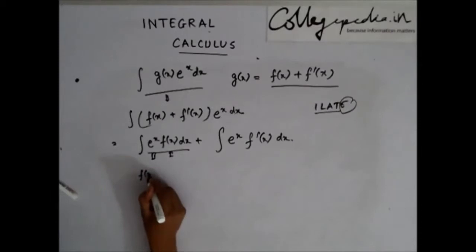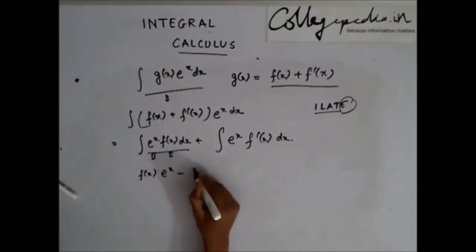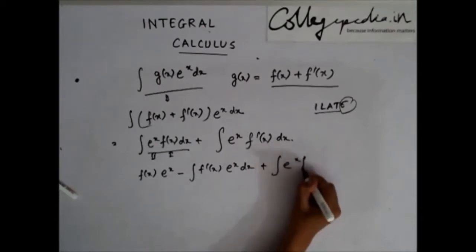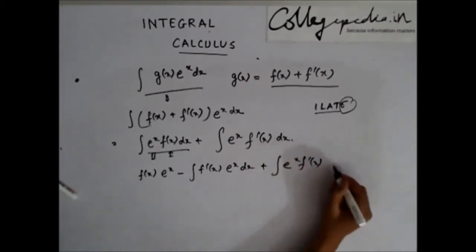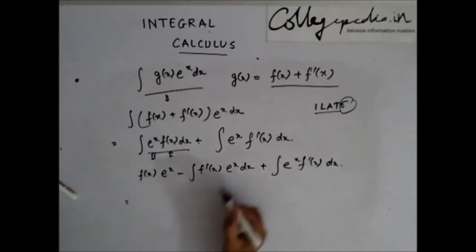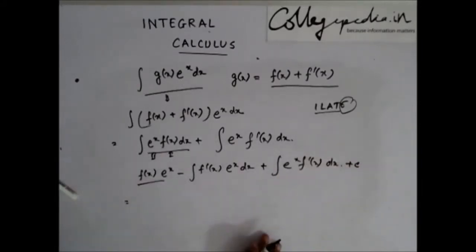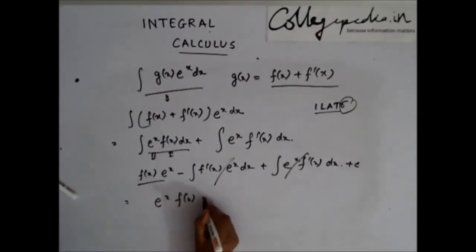So, this becomes f(x) times the integration of e^x minus integration of f'(x)e^x dx plus integration of e^x f'(x) dx. You see that, plus I have a constant from here. Well, you see that, this and this gets cancelled. So, I am left with e^x f(x) + c.